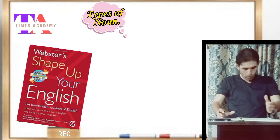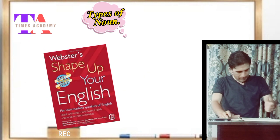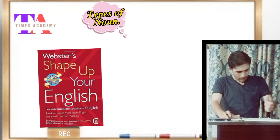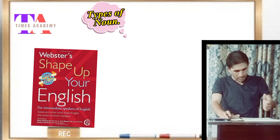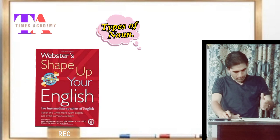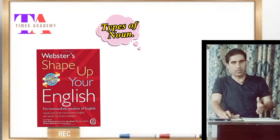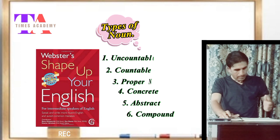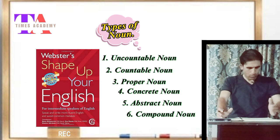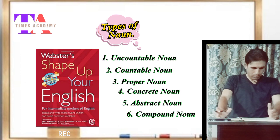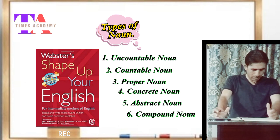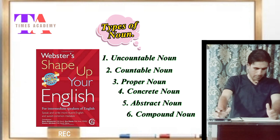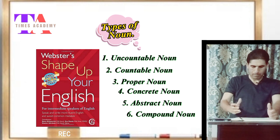The next source where the noun has been classified into six important types is Webster's Shape of Your English, written by Eleanor Abraham: number one, uncountable noun; number two, countable noun; number three, proper noun; number four, concrete noun; number five, abstract noun; and number six, compound noun.